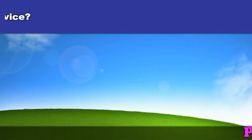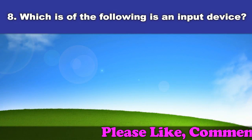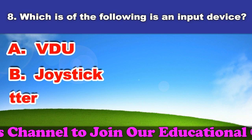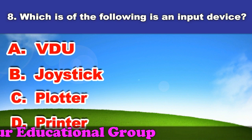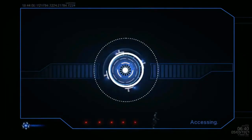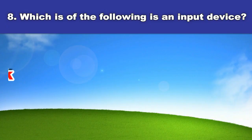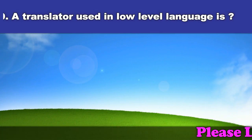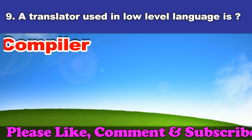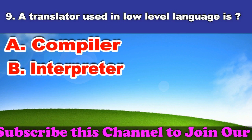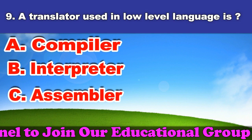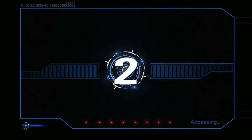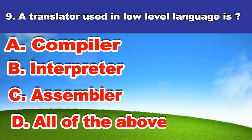Eighth question: Which of the following is an input device? A. VDU. B. Joystick. C. Plotter. D. Printer. And the answer is joystick. Ninth question: A translator used in low-level languages. A. Compiler. B. Interpreter. C. Assembler. D. All of the above. And the answer is all of the above.